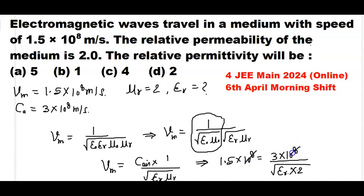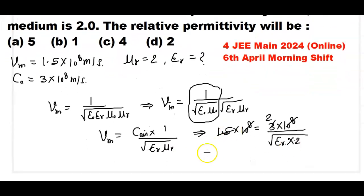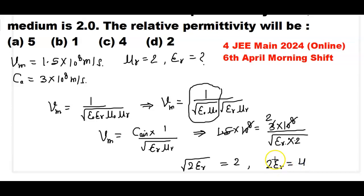Canceling 10⁸ from both sides, we get 1.5 = 3 / √(εr × 2). Rearranging: √(2εr) = 3/1.5 = 2, so 2εr = 4, which gives εr = 2. Therefore, the relative permittivity of the medium is 2.